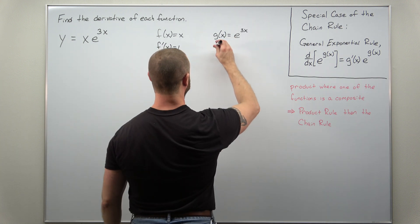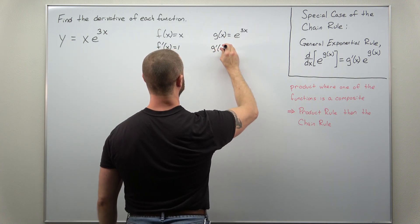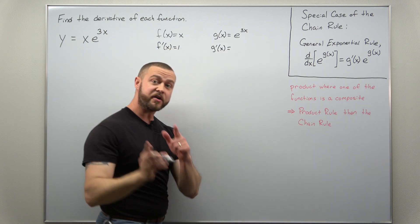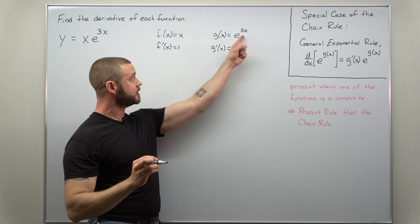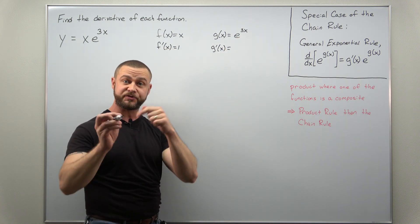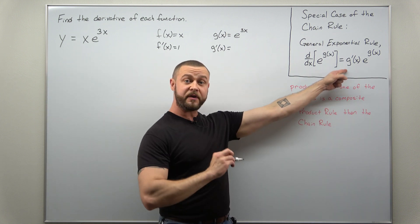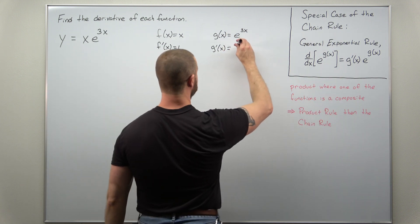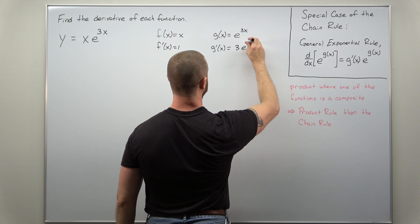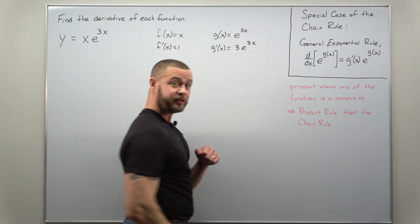When we differentiate e^(3x), we just calculate the derivative of our inside—the derivative of 3x, which is 3—and we bring that derivative down front. So g'(x) comes out to 3e^(3x).